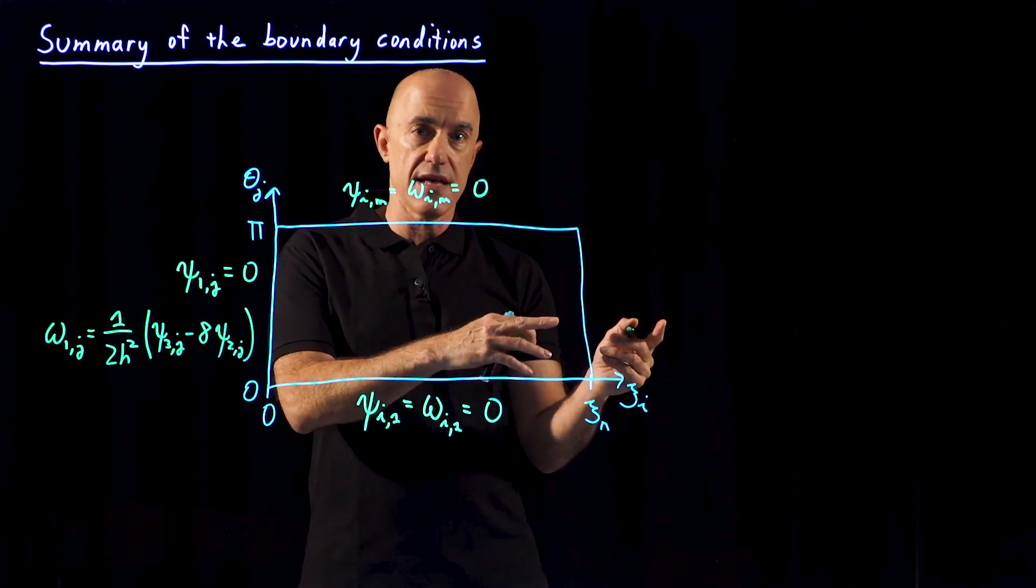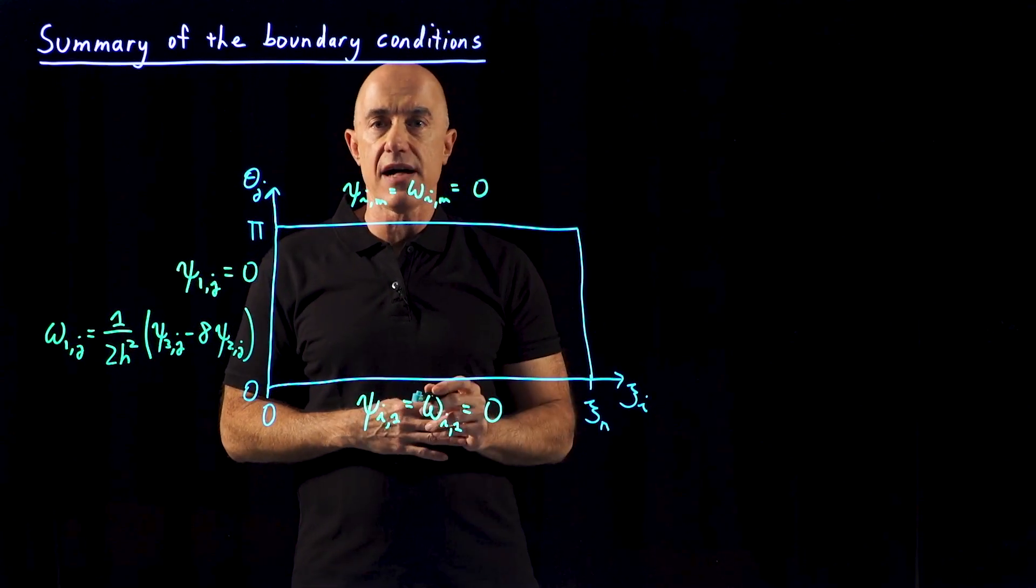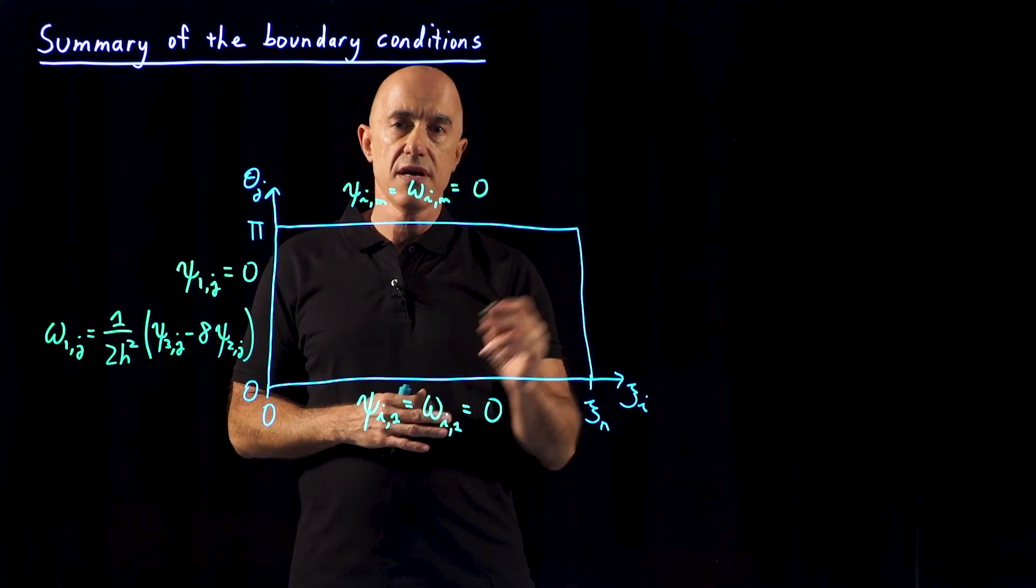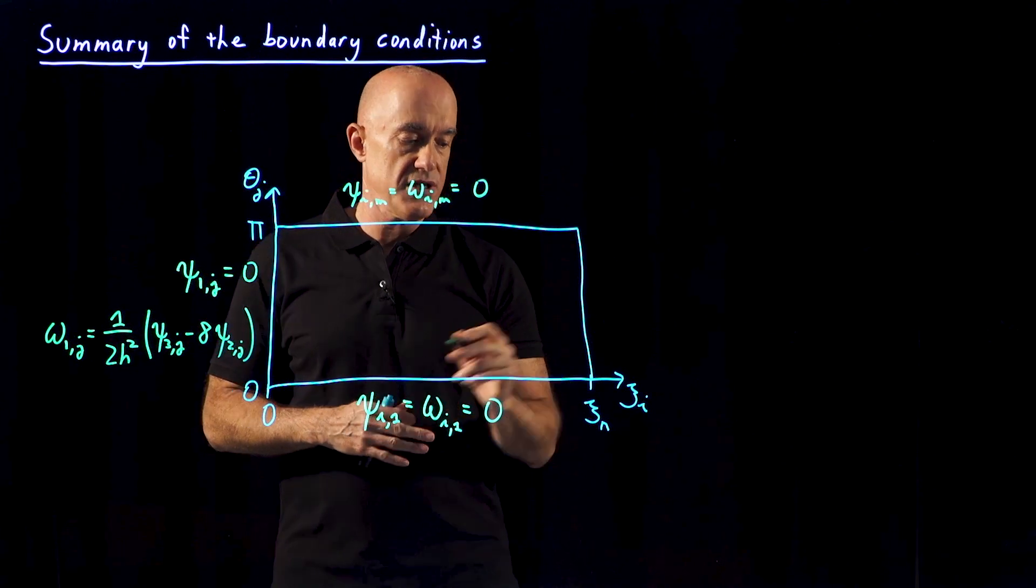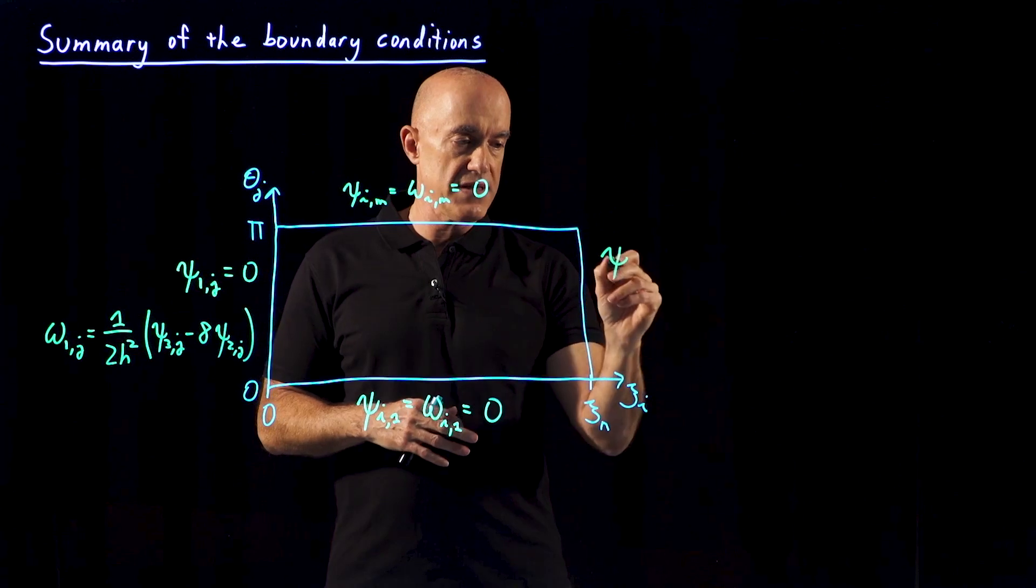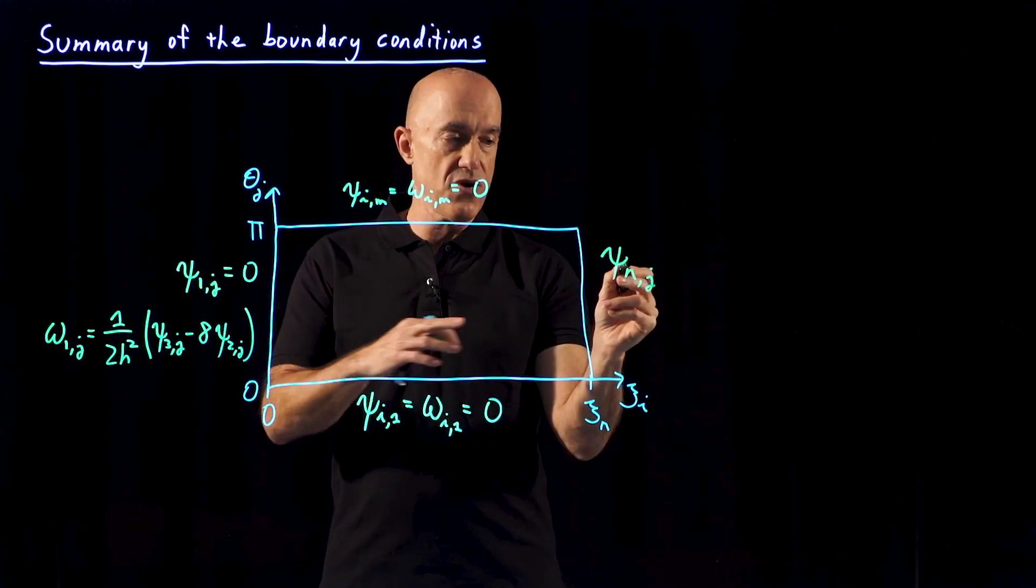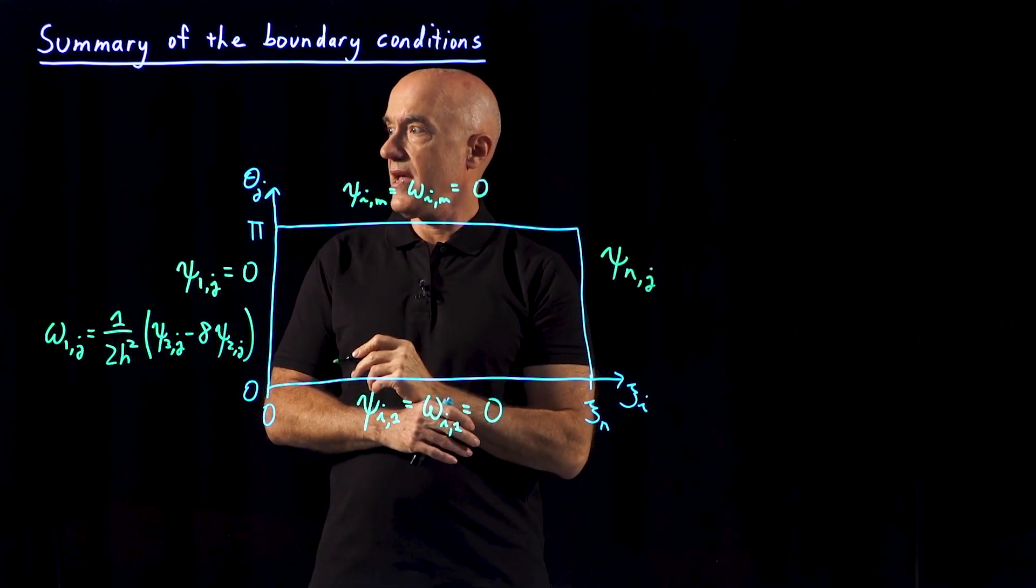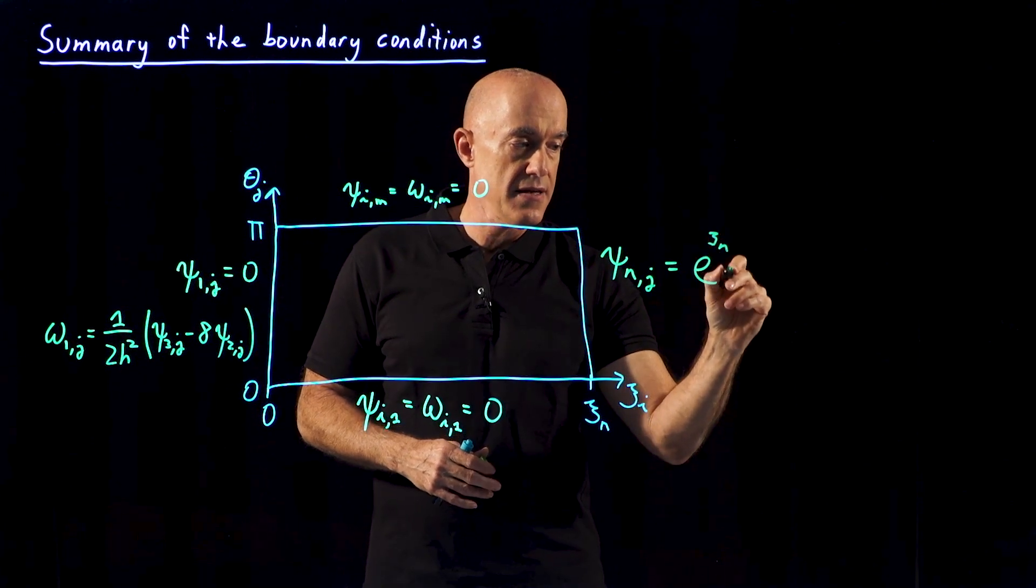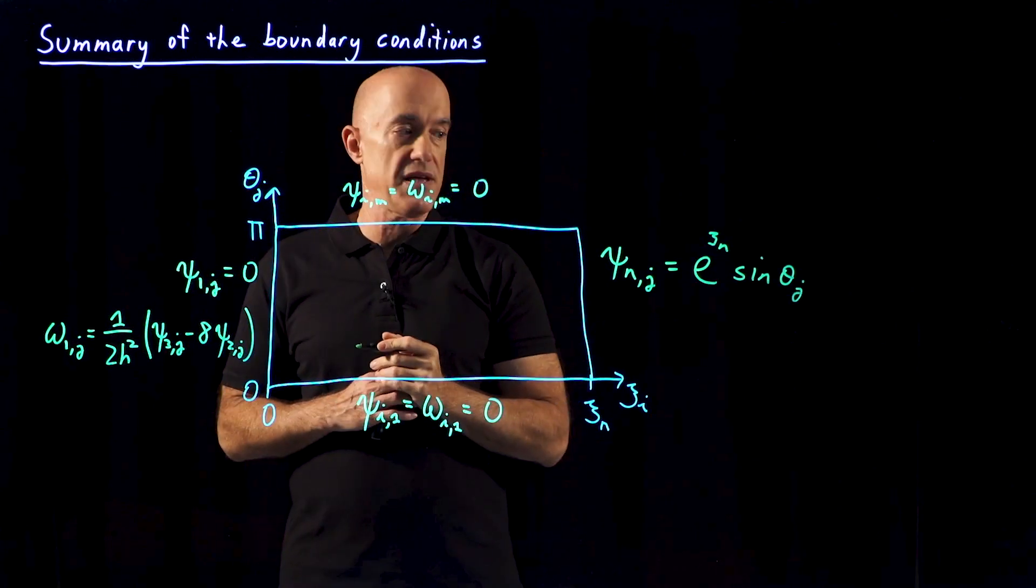Okay, finally on the right side of the rectangle. This is the maximum value of psi, the farthest distance away from the cylinder. That's the free stream boundary condition. The boundary condition on the stream function will be psi n,j because we're at the last grid point, and the free stream boundary condition is e to the psi n times sine theta j. So it depends on the polar angle.